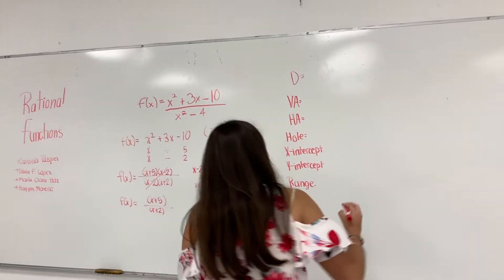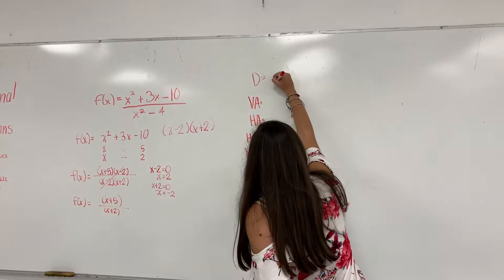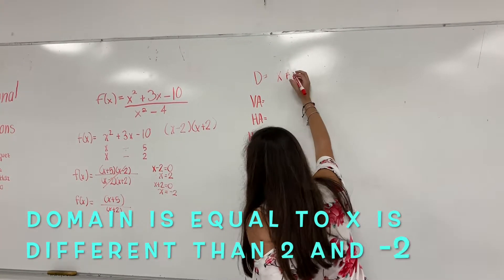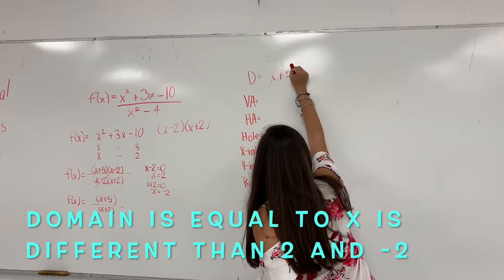So when we write the domain, we always write it like this: x is different than plus or minus 2.